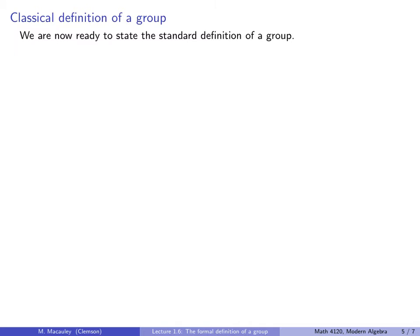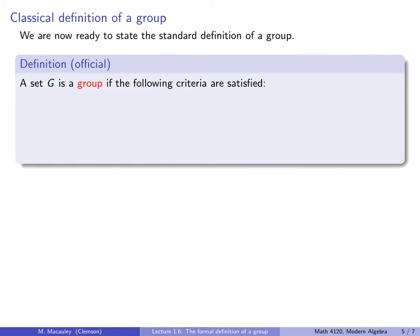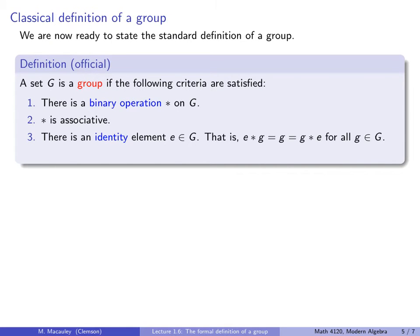Okay, so we are now ready to state the standard definition of a group. A set G is a group if the following criteria are satisfied. First, we need a binary operation on G. In other words, G has to be closed under this operation. That operation has to be associative. There has to be an identity element. This is like the do-nothing action. Specifically, the identity multiplied by any element, either on the left or on the right, is just that element. So that holds for all G in the group. And finally, every element has an inverse that we write as, and say, G inverse, satisfying the following. That in either order, if you multiply them together, you just get back to that identity element.